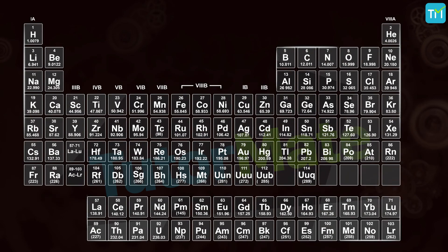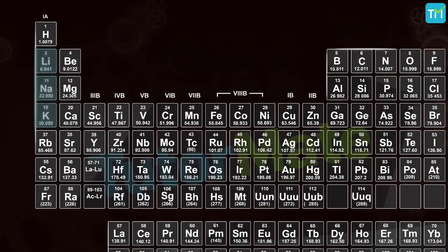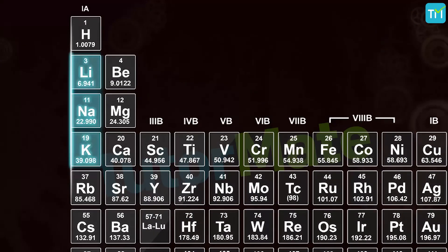If you take a quick look at the periodic table, you will see that these three elements — sodium, potassium, and lithium — belong to the same group known as the alkali metals.